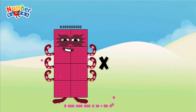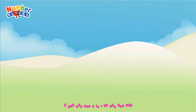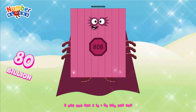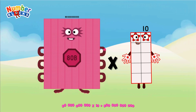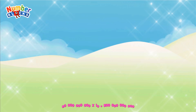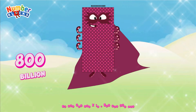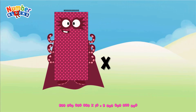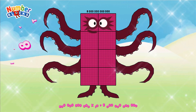8 billion multiplied by 10 equals 80 billion. 80 billion multiplied by 10 equals 800 billion. 800 billion multiplied by 10 equals 8 trillion.